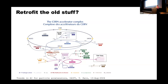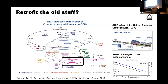We have existing accelerator complexes around the world. The CERN accelerator complex is very large and to some extent very old — some machines date from the 1950s. Should we retrofit 50-year-old equipment? Given what I said earlier, there should be no question about it — it is our test bed.